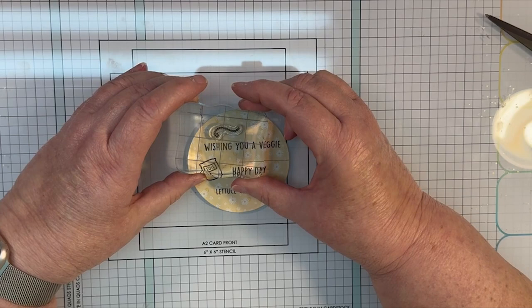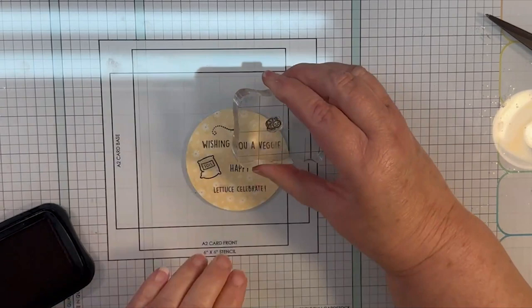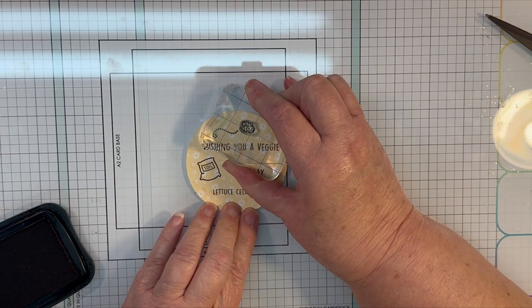I will also stamp a bee and a bee trail using the You're a Keeper stamp set from Lawn Fawn. Once I've got that stamped, I will go ahead and color in the little soil bag. And I also go around the outside edges of that piece with a little bit of Mustard Seed Distress Oxide ink, just to soften up that edge just a little bit.